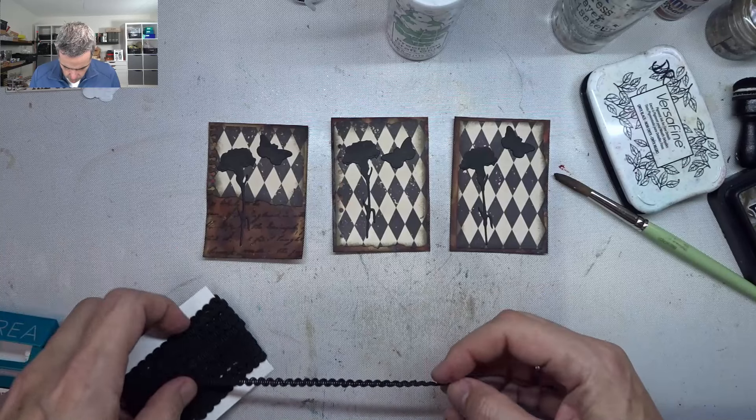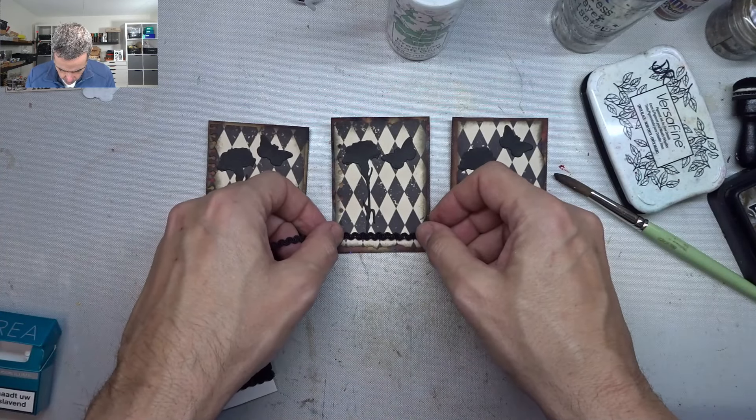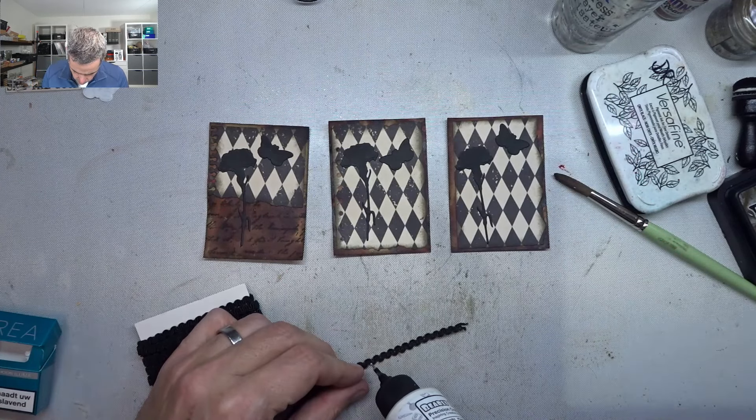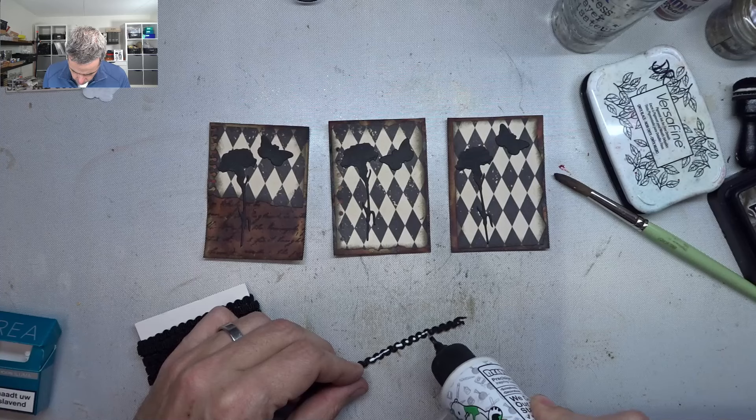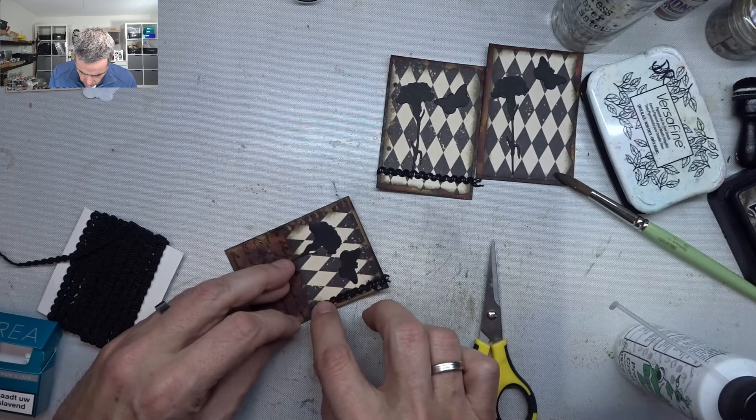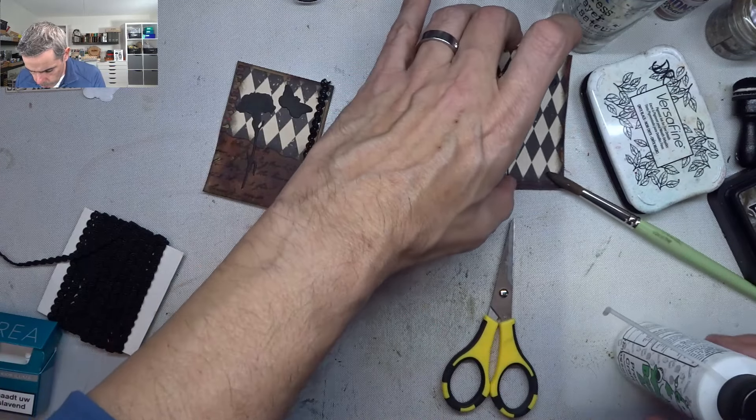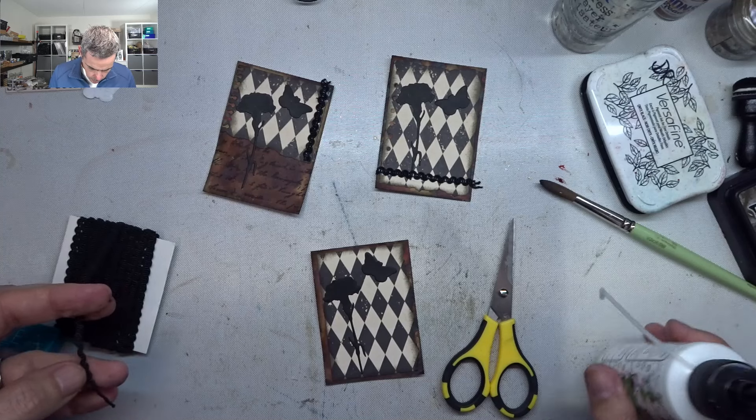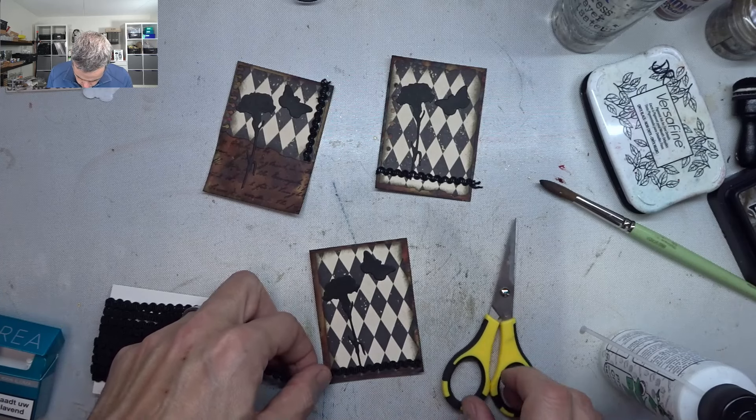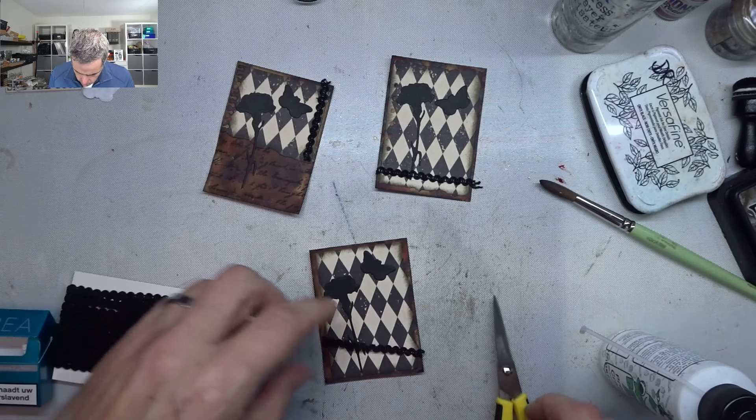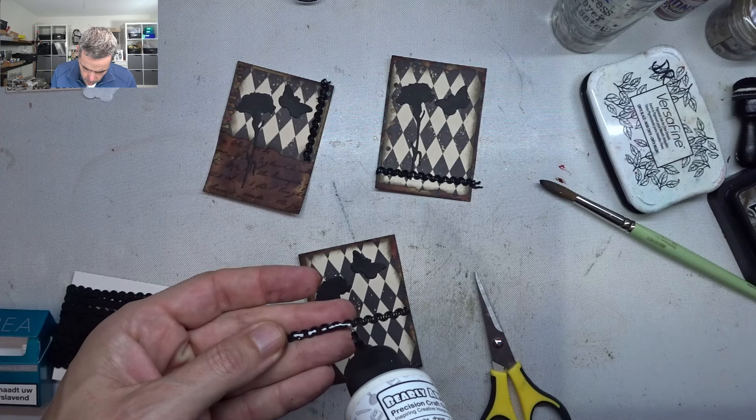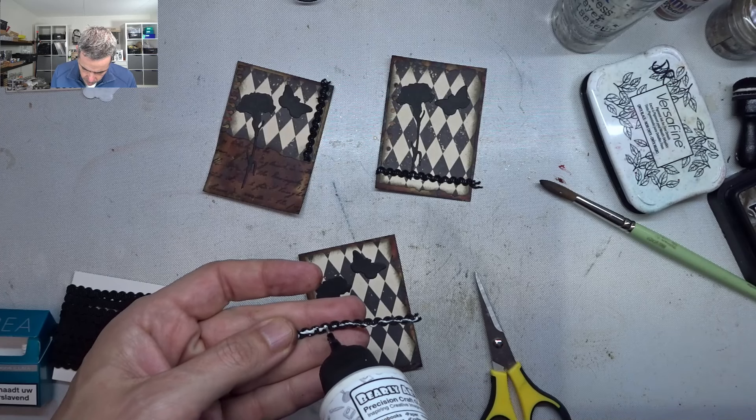Then I've got this lace that I just want to put here at the bottom. So I'm going to use my Barely Art to glue that down. That is on there. Just let that dry. Obviously this will take a bit longer to dry. And last but not least, this one. I'm going to put that one at the bottom again. And I will do the final bit of trimming when it's completely dry because then it will not shift. But I do like that bit of black lace on there.